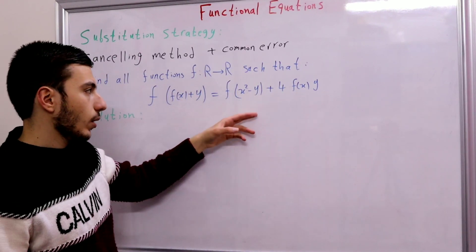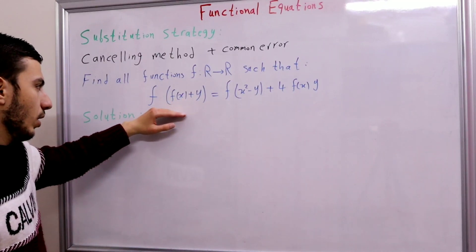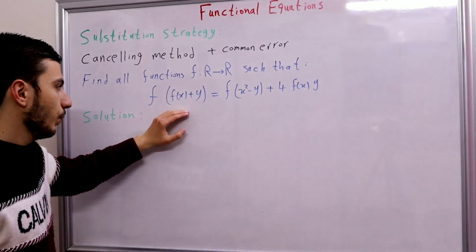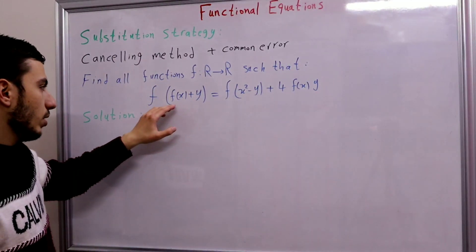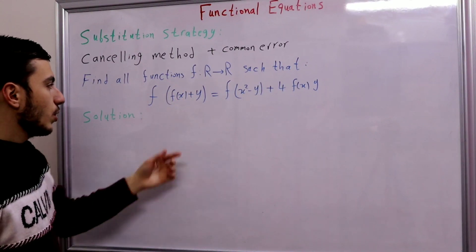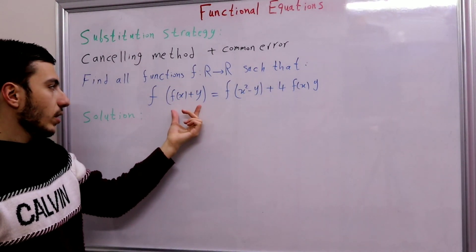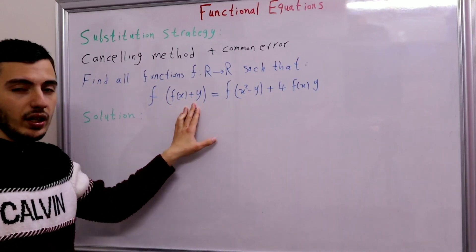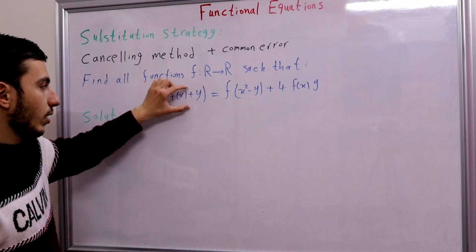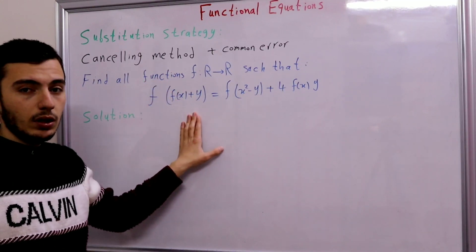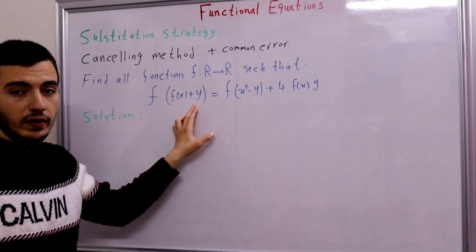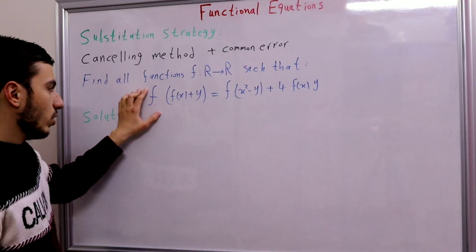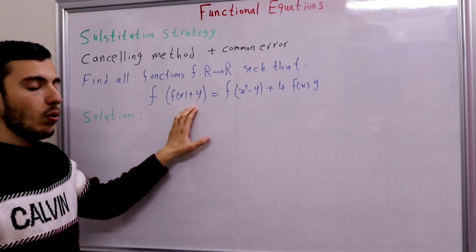Let's take a look at our functional equation. Here on the left-hand side we have an f, and inside this f we have some quantity — f(x) + y. We can say that this quantity is free, because y doesn't have any f, so we can make this quantity any real number by simply substituting y with y - f(x). So it becomes f(y), a free quantity.